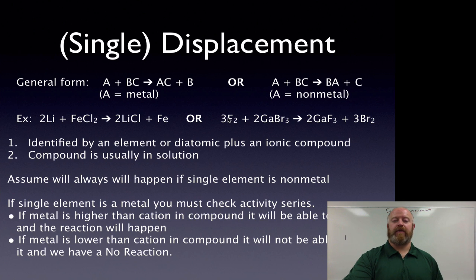So fluorine, again, if fluorine is more powerful, it can kick the bromine out. So bromine gets kicked out and then the gallium and fluorine become part of the compound. So it's one reaction type, but we see two slightly different things happening. If it's a metal that's by itself, it replaces the metal. If it's a non-metal by itself, it replaces the non-metal.